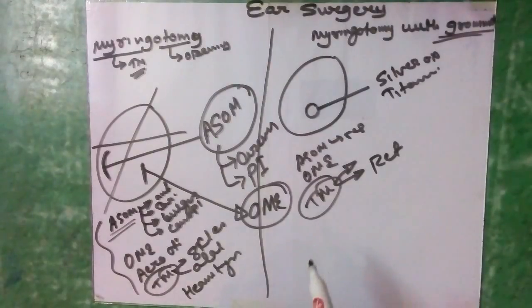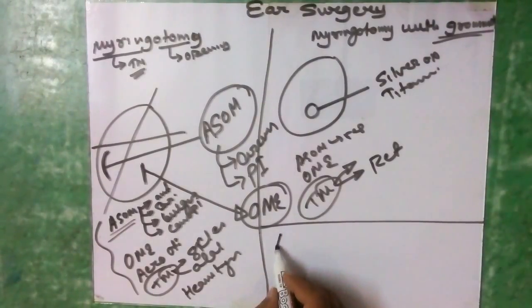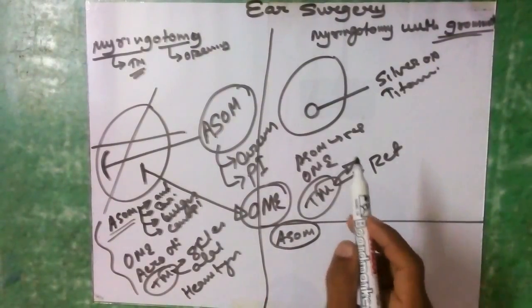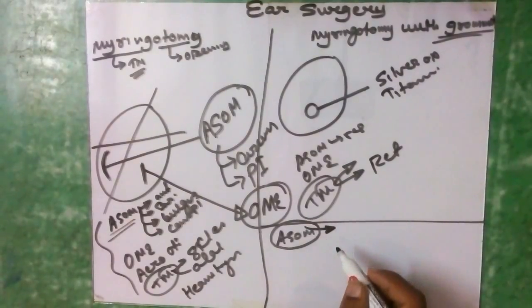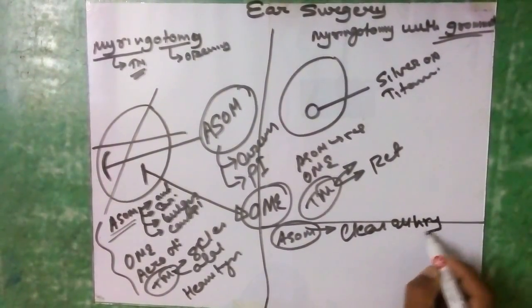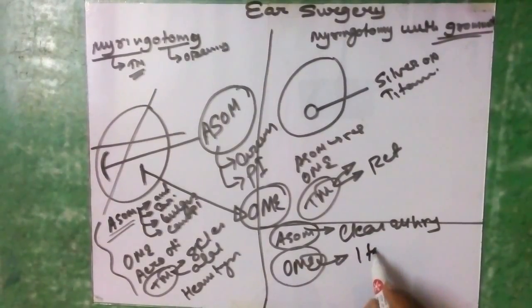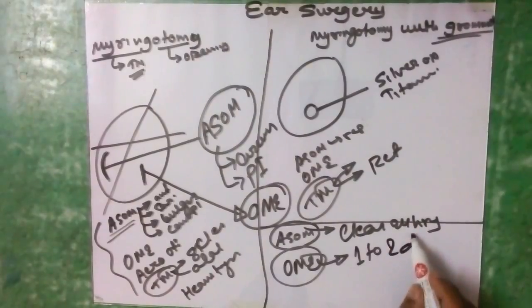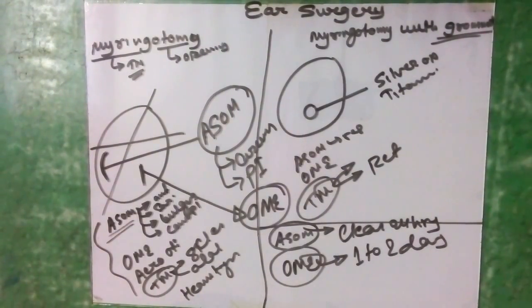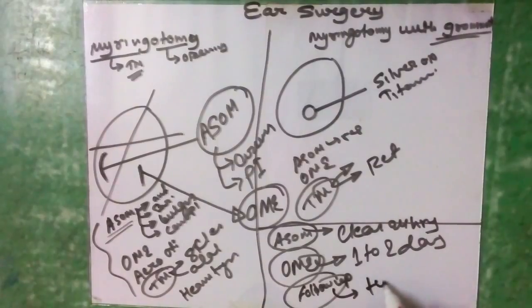Regarding postoperative management after grommet insertion: if it is a case of ASOM, the discharge that comes out through the external auditory canal needs to be cleaned — discharge is cleaned every 24 hours. If it is OME, cotton is placed in the ear and changed regularly every one to two days. Follow-up is twice yearly for otoscopy and visualization under the microscope.